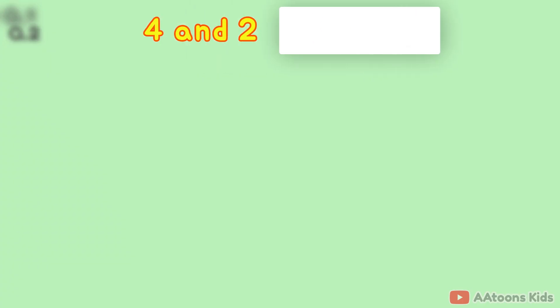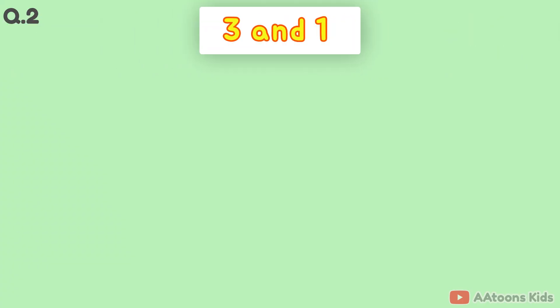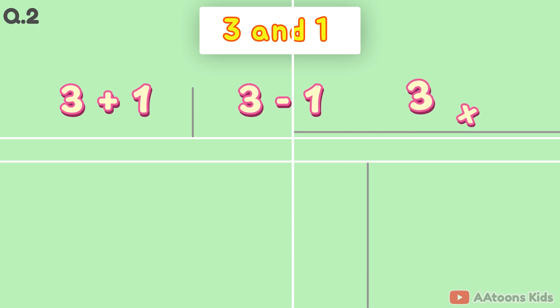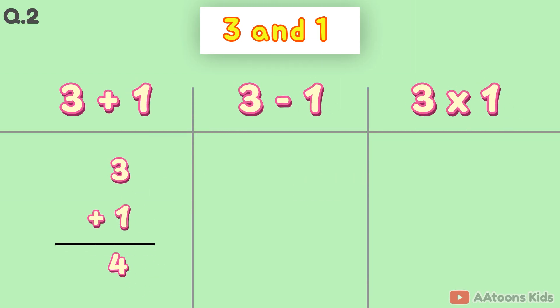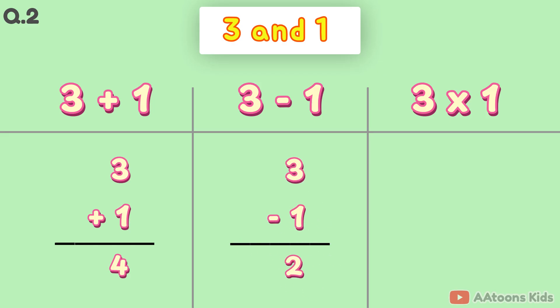The two numbers are 3 and 1. 3 plus 1 is 4. 3 minus 1 is 2. 3 times 1 is 3.